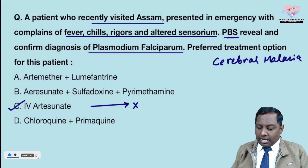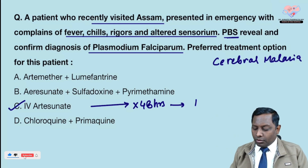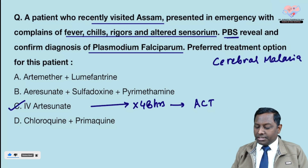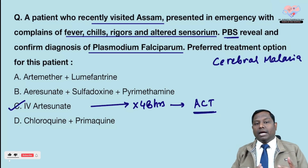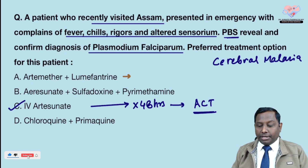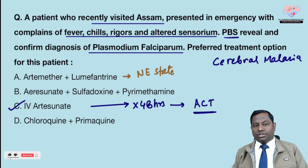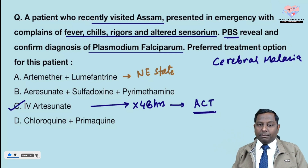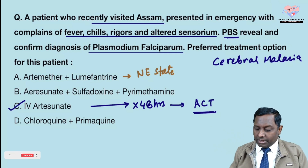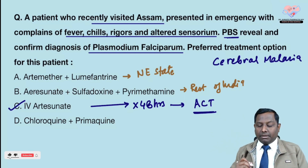Once the patient regains consciousness, after 48 hours we will continue with artemisinin combination therapy (ACT). ACT uses an artemisinin derivative like artemisinin or artesunate along with another drug. Artemether-lumefantrine is one ACT combination, mainly utilized if the patient is from the northeast states. Artesunate-sulfadoxine-pyrimethamine (ASP) is utilized if the person is from the rest of India.